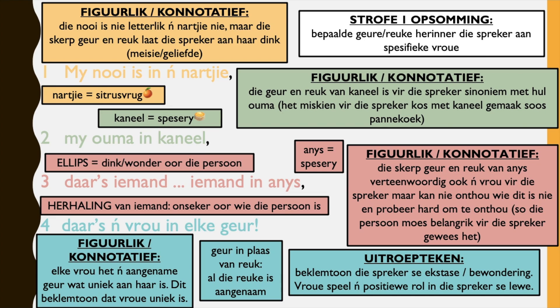And then strofe een opsomming — stanza one summary. Bepaalde geure of riekere herinner die spreker aan spesifieke vroue. So specific flavors and scents remind the speaker of specific women that have been present in his life.